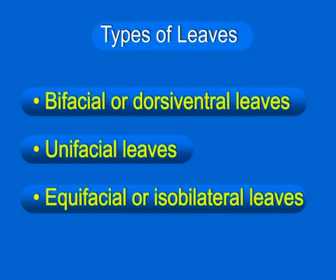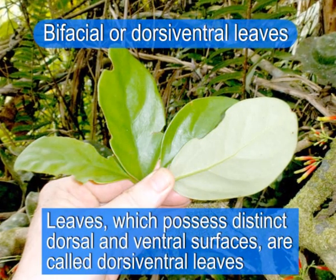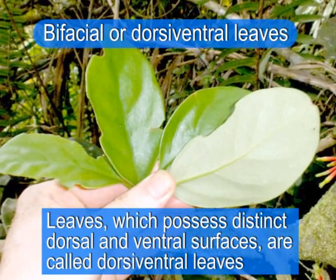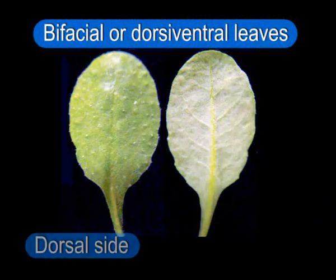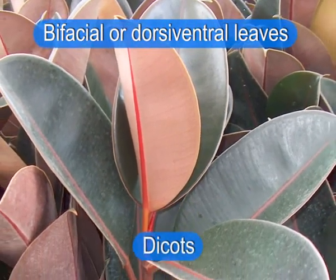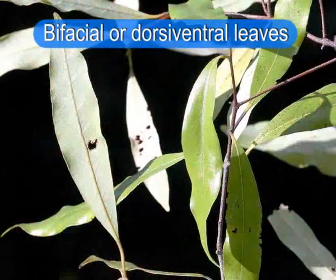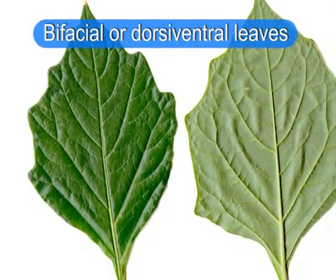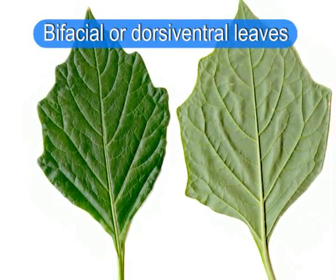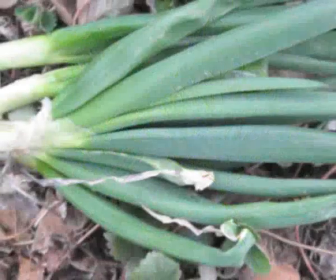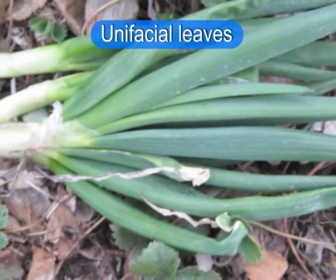Let us start with the bifacial or dorsiventral leaves. The leaves which possess distinct dorsal and ventral surfaces are called dorsiventral leaves, also known as bifacial leaves. Most of the dicots have dorsiventral leaves. These leaves lie horizontally with distinct upper and lower surfaces, thus having unequal illumination on the two surfaces.